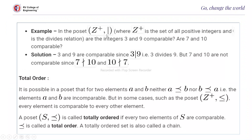Example: in the poset (Z⁺, divides), where Z⁺ is the set of all positive integers and 'divides' is the relation — are integers 3 and 9 comparable? Since 3 divides 9, they are comparable. Are 7 and 10 comparable? We check if 7 divides 10 or 10 divides 7. Neither holds, so they are incomparable.